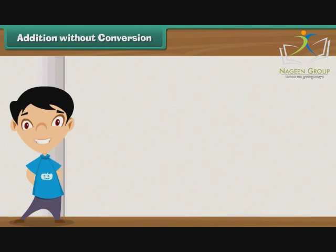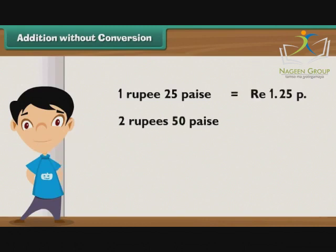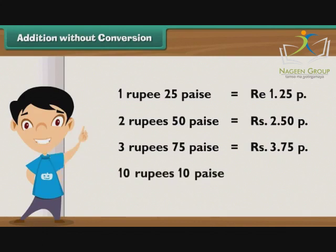Now we can write 1 rupee 25 paise as Rupee 1.25 P, 2 rupees 50 paise as Rupees 2.50 P, 3 rupees 75 paise as Rupees 3.75 P, and 10 rupees 10 paise as Rupees 10.10 P.